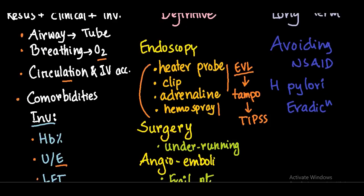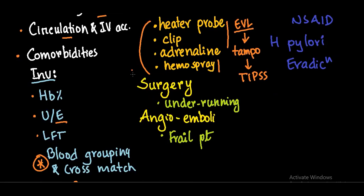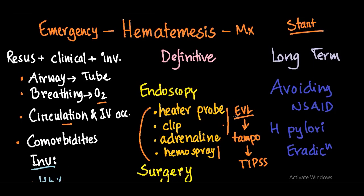In non-variceal bleeding, if endoscopic therapy fails, the next step would be surgery. Surgical options include underrunning for both gastric and duodenal ulcers. If the patient is frail and older, you can also use angiographic embolization.